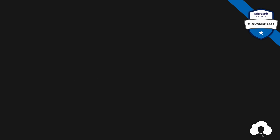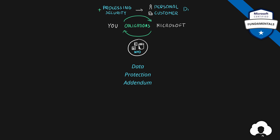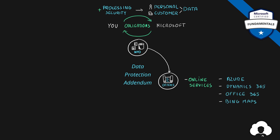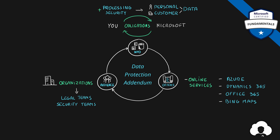Our next document is called Data Protection Addendum. This document covers information about the obligations between your company and Microsoft, specifically around the processing and security of your personal and customer data. Because this document is an appendix to Online Services Terms, it talks about those obligations in the context of the online services you purchase from Microsoft. It's a very good document designed for both your legal teams and security teams to review. While it's similar to Online Services Terms, this one focuses on the data and security of that data when using those online services.